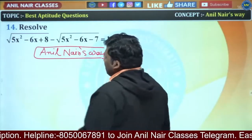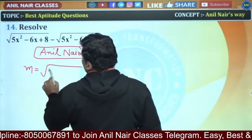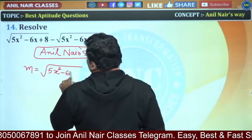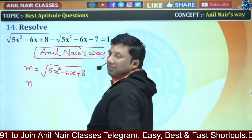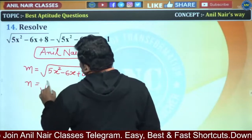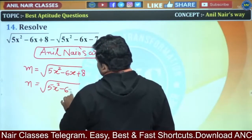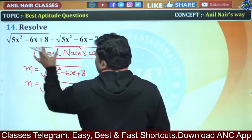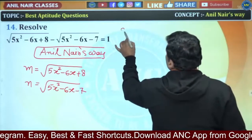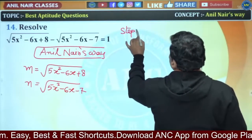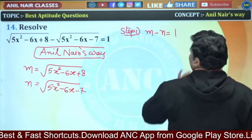I called the first term m: m = √(5x²-6x+8). I called the second term n: n = √(5x²-6x-7). This is m and this is n. Step number 1: m minus n is equivalent to 1.